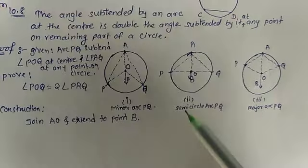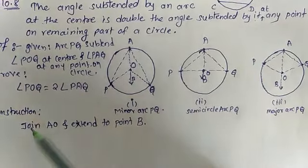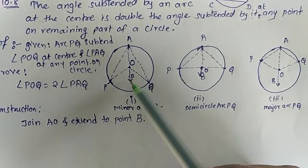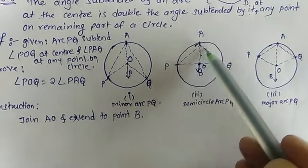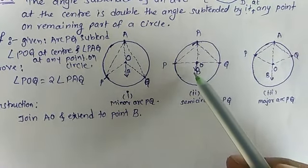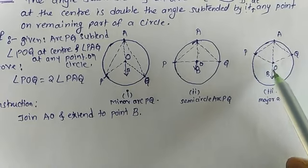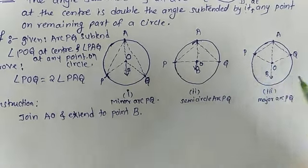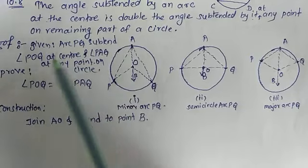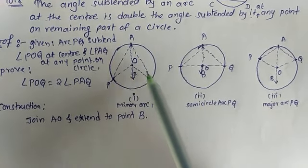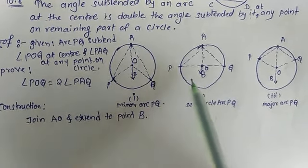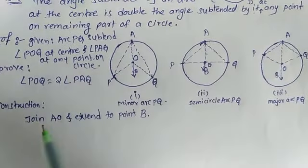Here there is a construction: we join AO and extend it up to B in each case. Given that arc PQ subtends angle POQ at the center and angle PAQ at any point on the circle in each case.